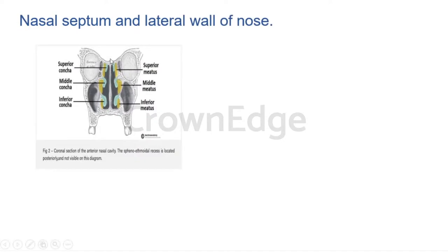In this coronal section you can see the orbit with its eye sockets, the medial nasal septum in the midline, and the lateral wall of the nose with elevations and depressions — superior, middle, and inferior conchae. You can also see the maxillary air sinus. The maxillary air sinus opens into the middle meatus, which is below the middle concha. The superior meatus is below the superior concha, and the inferior meatus is below the inferior concha.